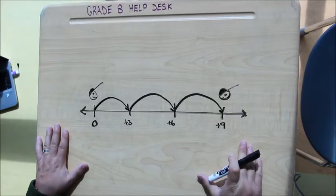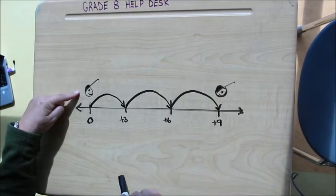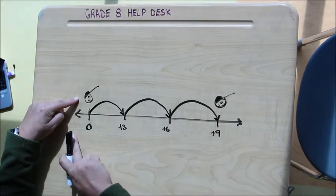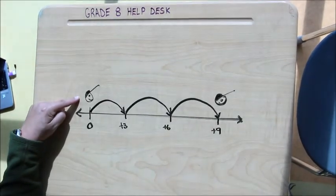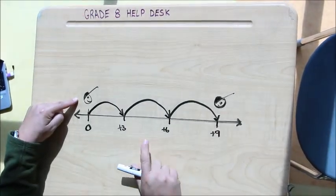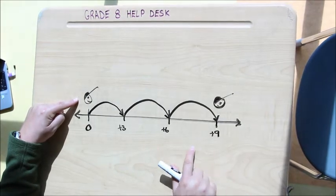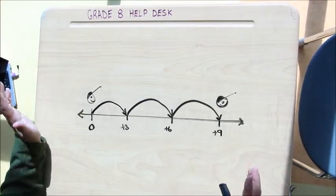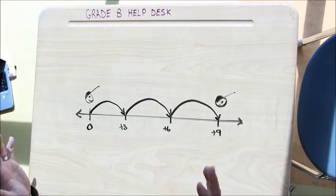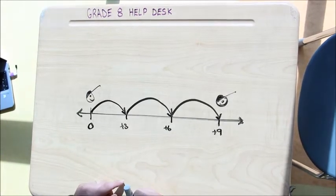All right, so here we have a little person who is apparently going on a little journey here, and we've got a number line. So what we're trying to figure out is, what is the multiplication question that is represented by this picture? Okay, so there's a couple of things that we can know right off from looking at this picture.